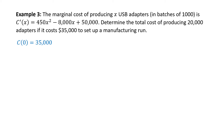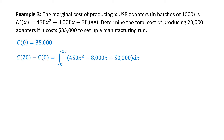That's what it costs to start — in the production setting, this is the cost prior to producing one single USB adapter. To determine the total cost, we need to reverse the derivative of the cost function to get back to the cost function. For 20,000 adapters, we write the integral from 0 to 20 of 450x squared minus 8,000x plus 50,000 dx. The net change theorem tells us this integral equals C evaluated at 20 minus C evaluated at 0.